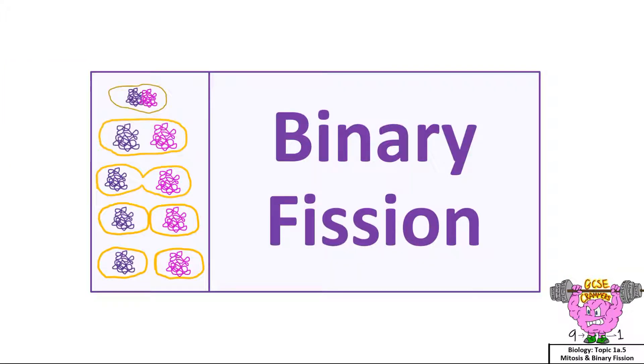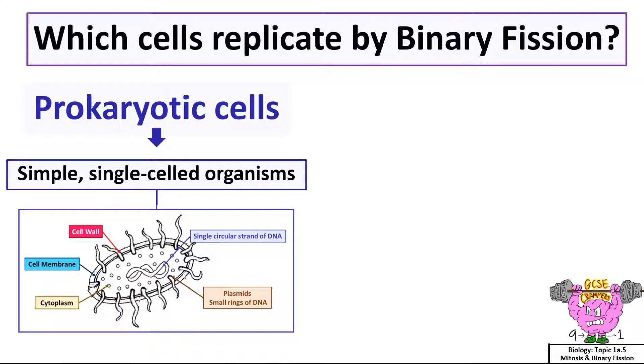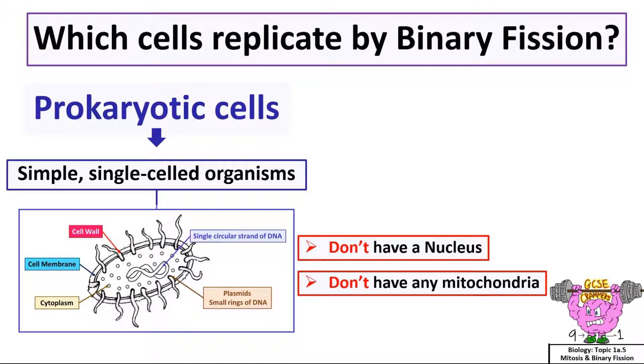Binary fission. Which cells replicate by binary fission? Prokaryotic cells, which are simple single-celled organisms. Prokaryotic cells don't have a nucleus, they don't have any mitochondria, and they have circular DNA and plasmids. For example, bacteria cells.